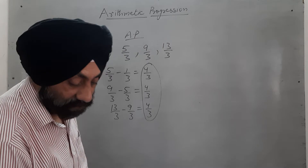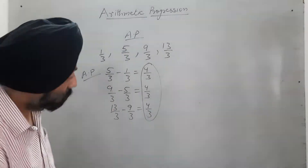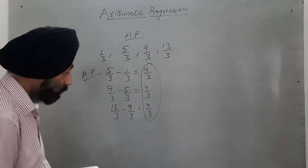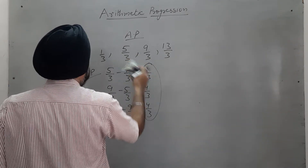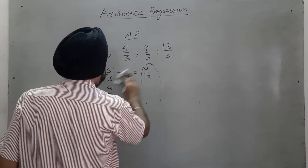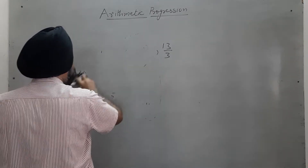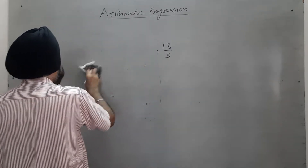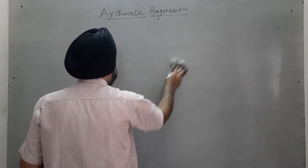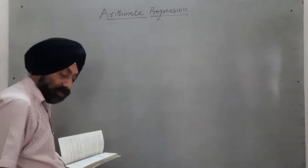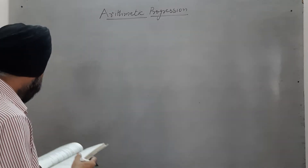We have to check second term minus first term, then third minus second, and fourth minus third. When the common difference is constant and all values are the same, we say these numbers are in AP.